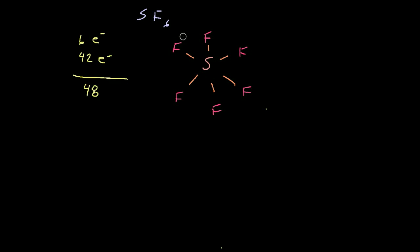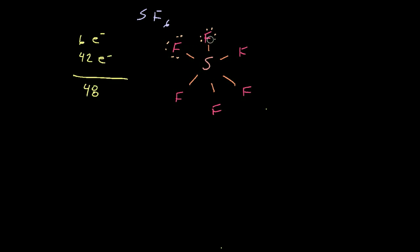Each fluorine already has two electrons from the single bond, so I just need to add six more dots to each one to complete its octet. We have 48 minus 12 = 36 remaining electrons, and there are six fluorines, so 36 divided by 6 = 6 electrons to add per fluorine. I'll fill in six electrons on each fluorine.